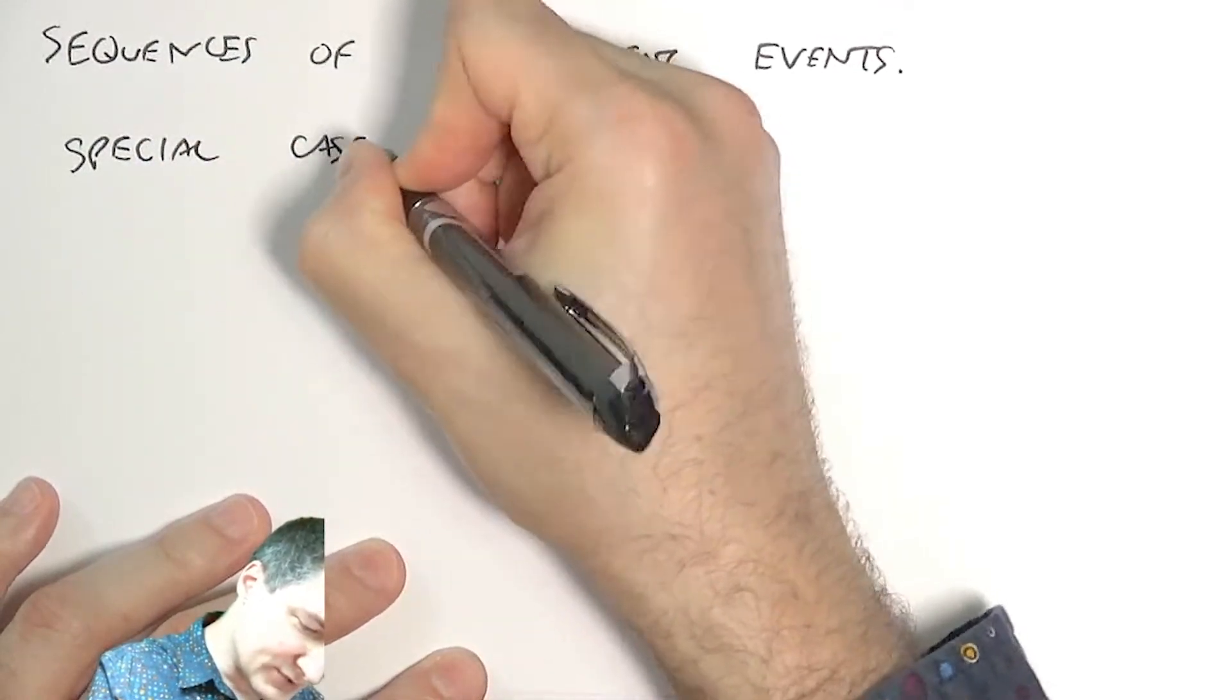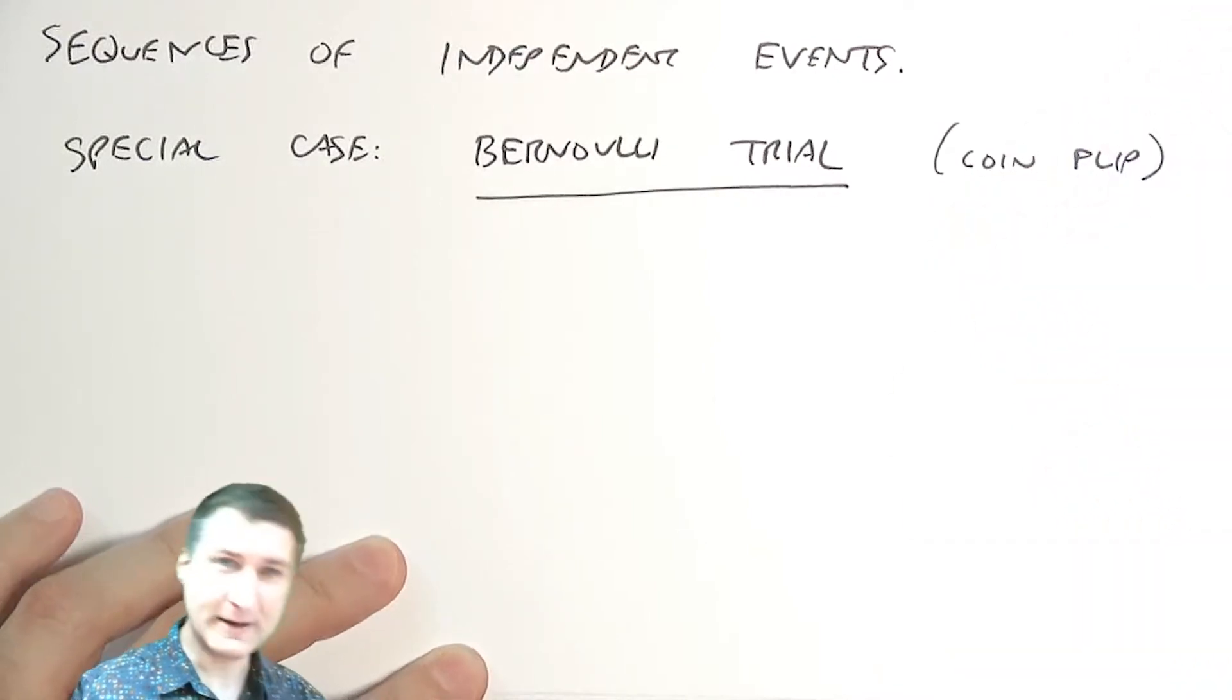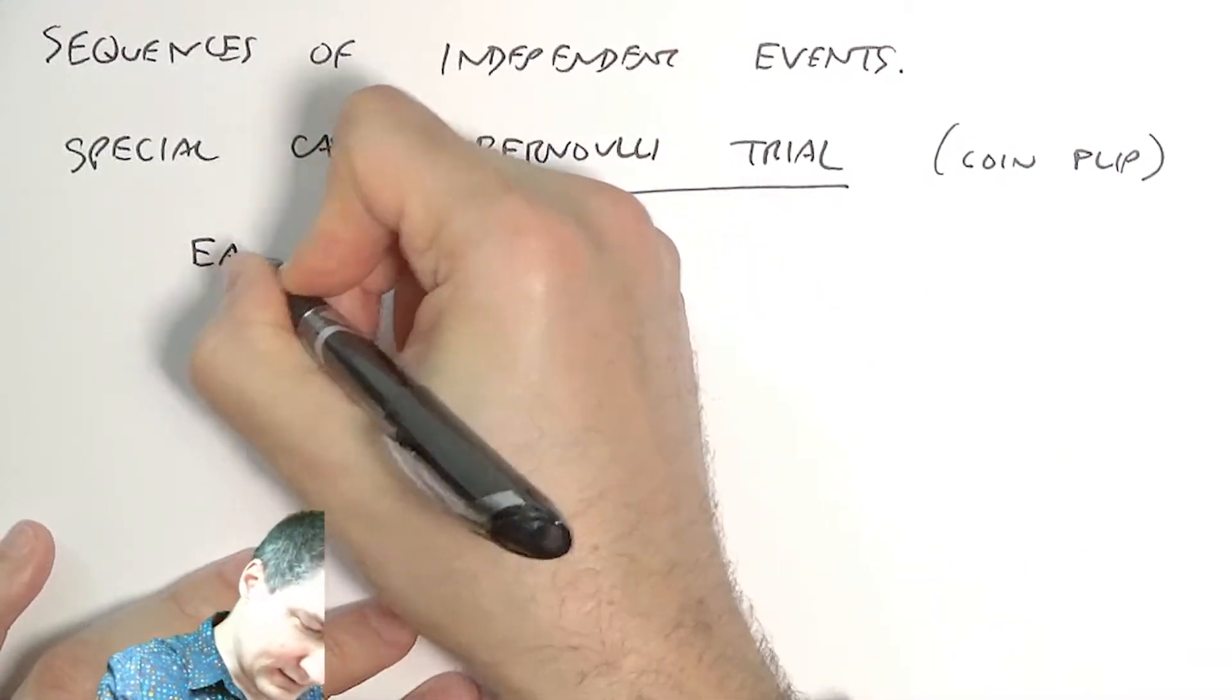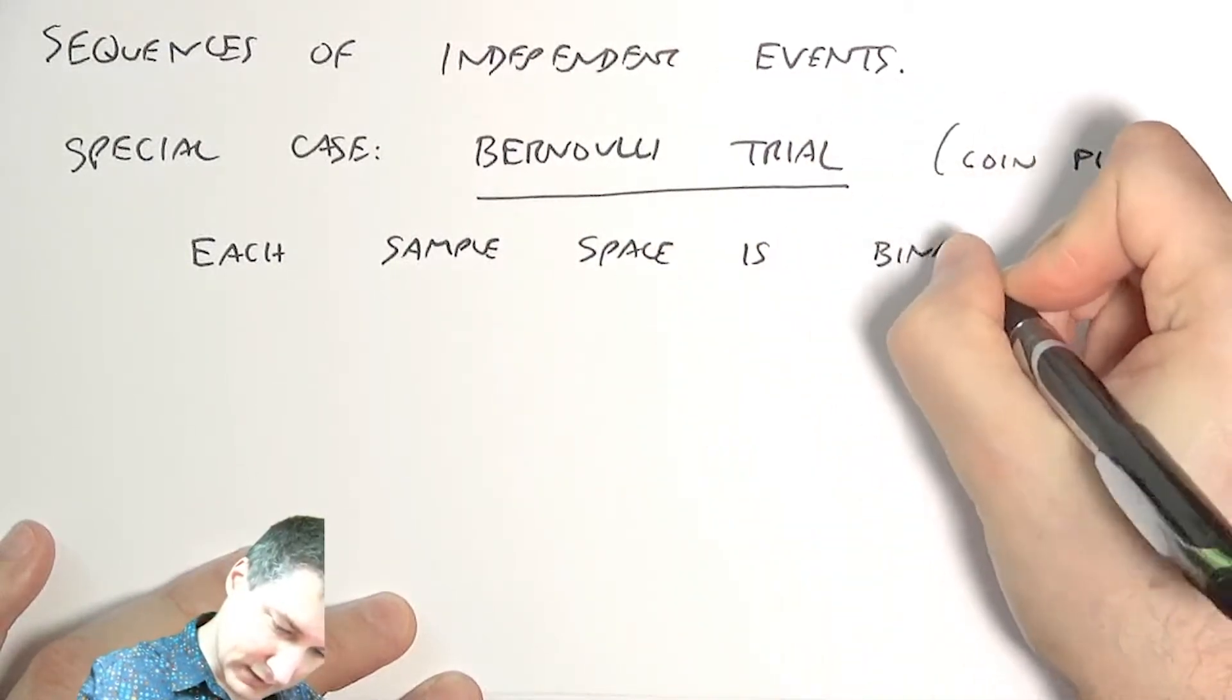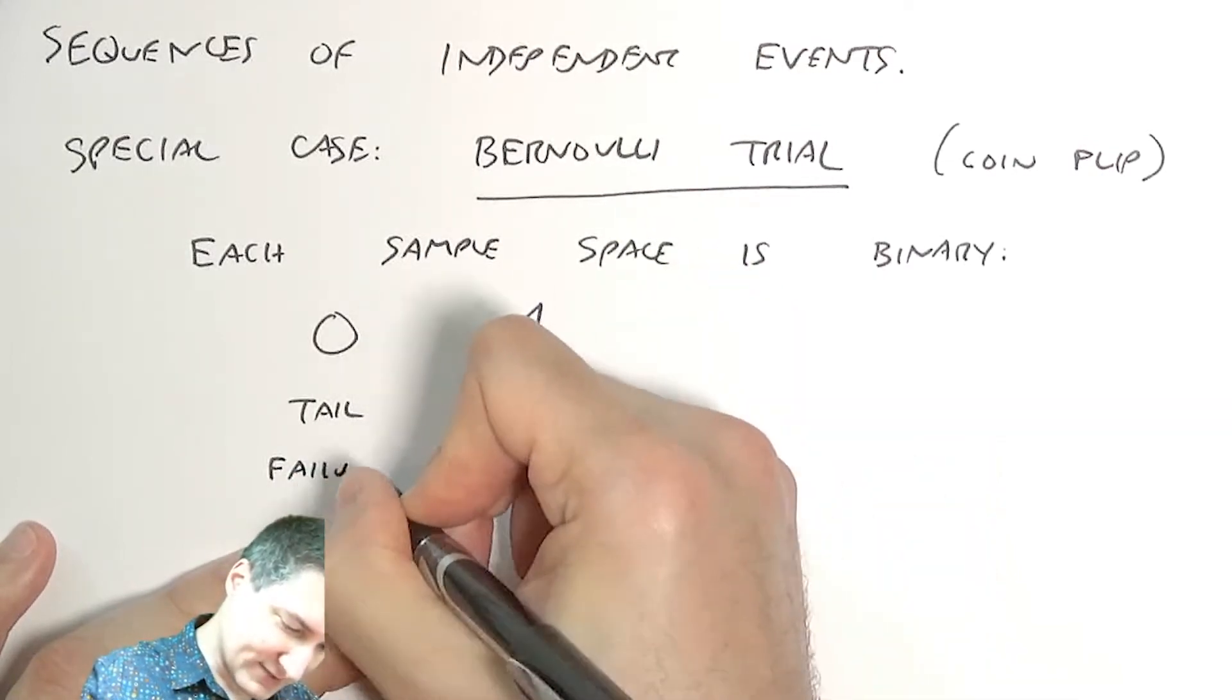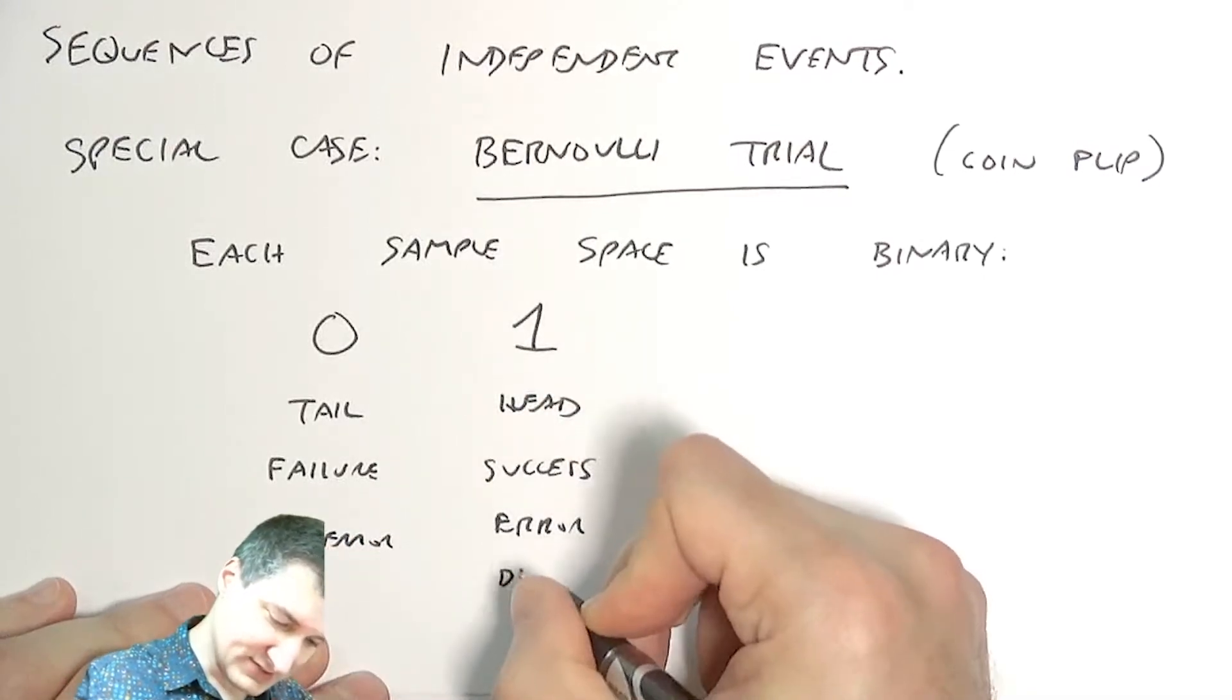A special case of this is what's called a Bernoulli trial, which is a fancy word for coin flip. All this means is that every sample space is binary: either I succeed or I fail. Zero or one, tail or head, failure or success, error or no error, disease or no disease.